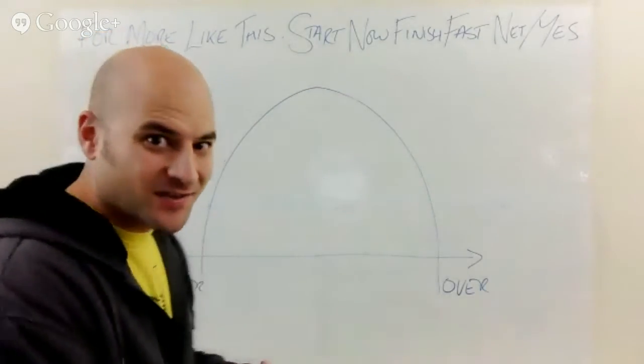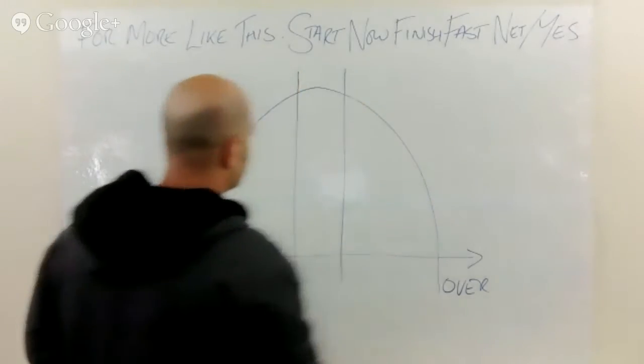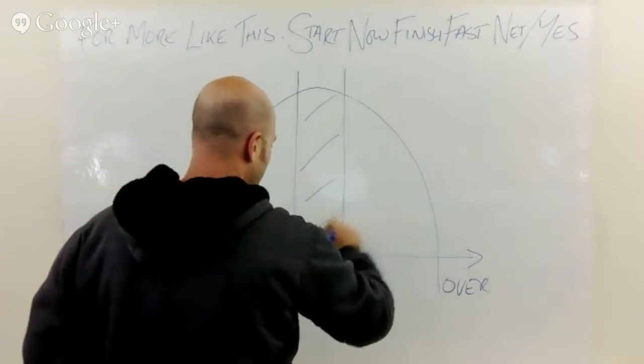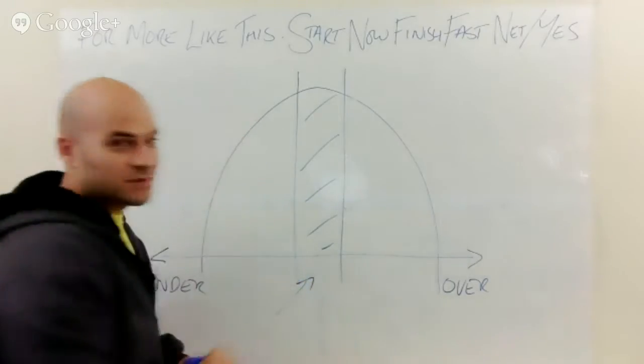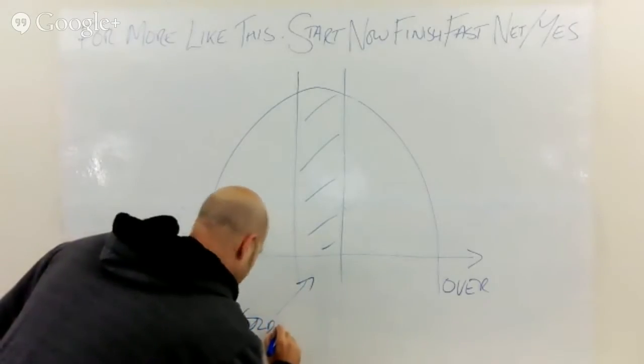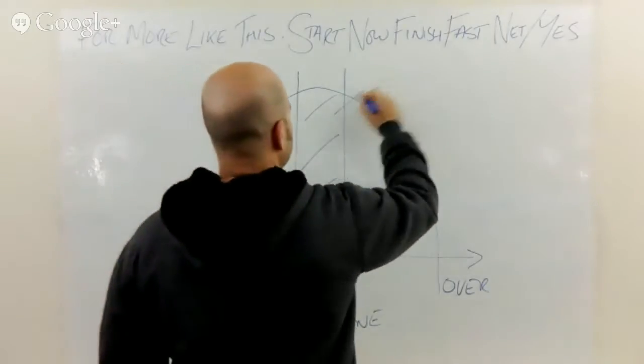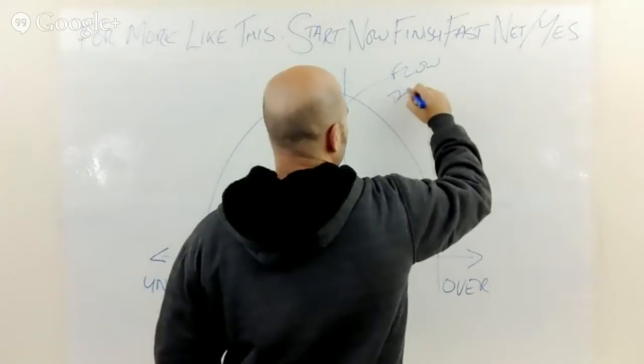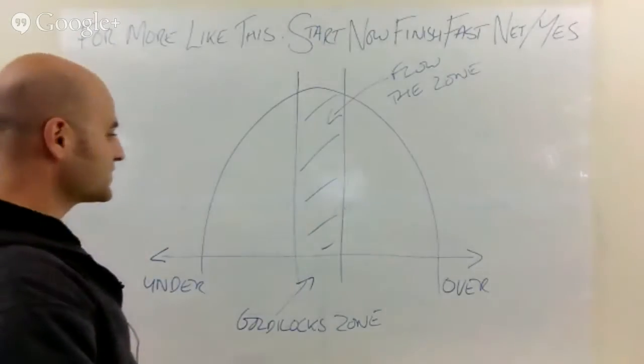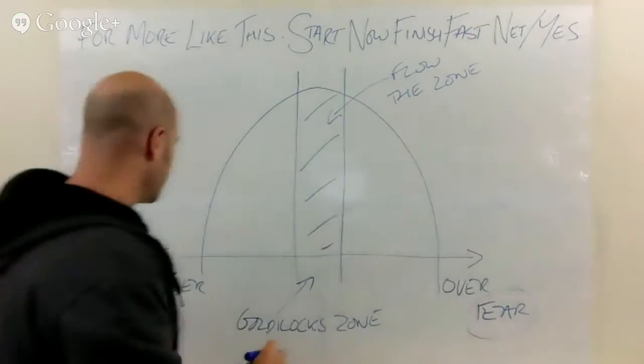If you are under-stimulated or over-stimulated, you are very unlikely to experience this state of being in creative flow. The area where you're most likely to experience it is where you're neither too stimulated or under-stimulated, sometimes known as the Goldilocks zone. Yesterday we talked about fear, which is a situation where you might be over-stimulated.